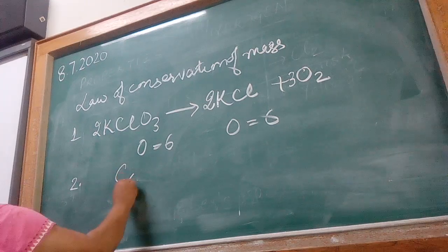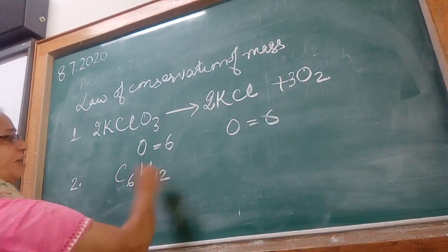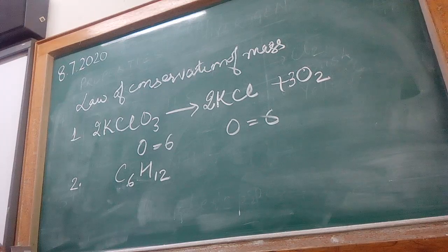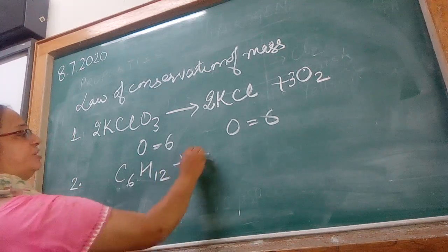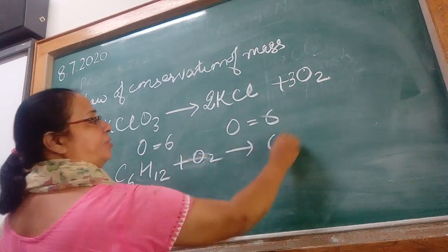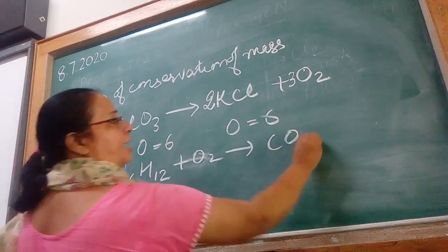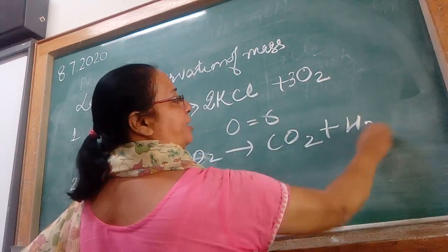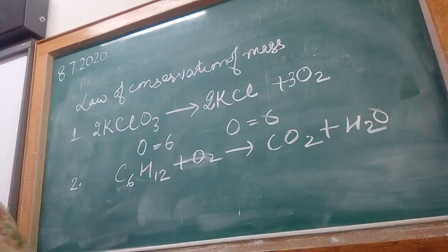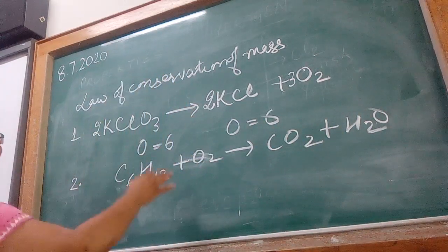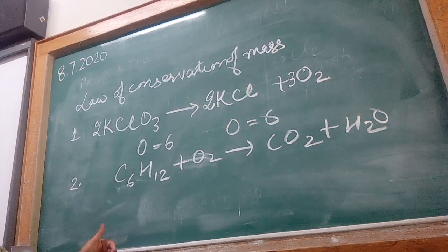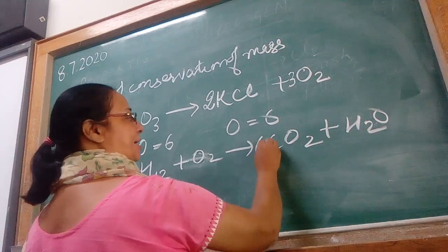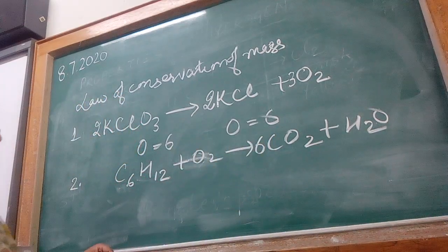The next equation is C₆H₁₂ reacting with oxygen to give carbon dioxide and water. In the first step, when we look at the equation, we can see carbon is not balanced. So let's start with carbon. We have 6 carbon on the left side, so we place 6 carbon on the right side — carbon is balanced.